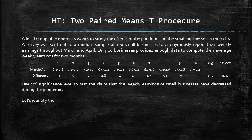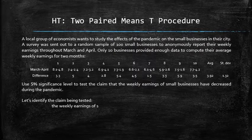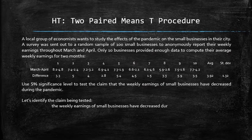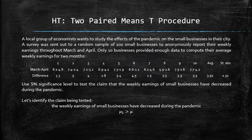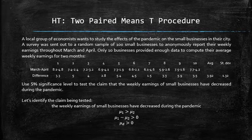Now let's identify the statistical claim that needs to be tested. The claim is that the weekly earnings of small businesses in March are greater than the weekly earnings of small businesses in April. So we can symbolically express the claim as mu1 is greater than mu2, or equivalently as mu1 minus mu2 is greater than 0, or equivalently as mu_d, the average of the differences, is greater than 0. Since the claim is about the paired means and the standard deviation of the population of the differences is unknown, we will use the t procedure for one mean.